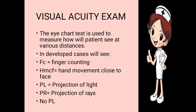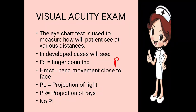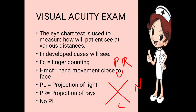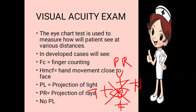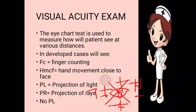Next is projection of light (PL) — we project a torch light into the patient's eye and ask if they can see it. If the patient can see PL, we then do projection of rays (PR) in four directions: upper, lower, nasal, and temporal. We project light from each direction and ask the patient; if they can see it, we mark plus (+); if not, we mark minus (−) for that side.